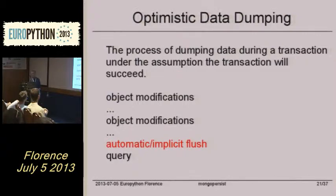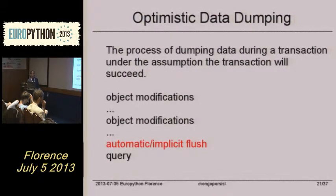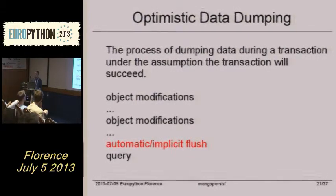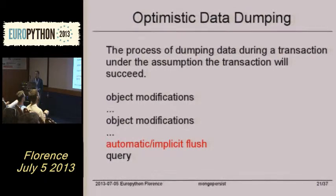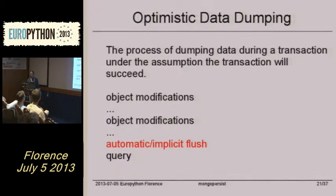So we had to flush first. MongoPersist is doing flushing before any query operation to have the object modifications in the database. Some ORMs and MongoPersist also try to delay writing data to the database as much as possible.